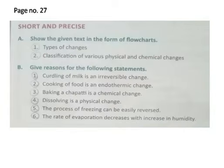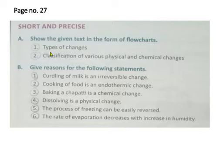Then come to question answer, page number 27. Short and precise, A number: show the given text in the form of flowcharts — types of changes. And question number 2: classification of various physical and chemical changes.